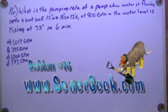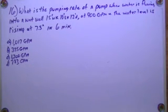Okay, problem number 16, wastewater collection book from SewerGeek.com. What is the pumping rate of a pump when water is flowing into a wet well 15 feet by 10 feet by 12 feet deep at 900 gallons per minute, and the water level is rising at 7.5 inches in 6 minutes?